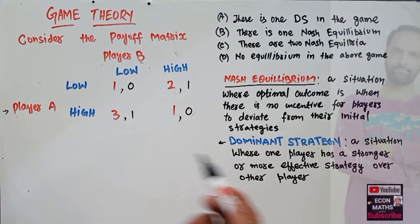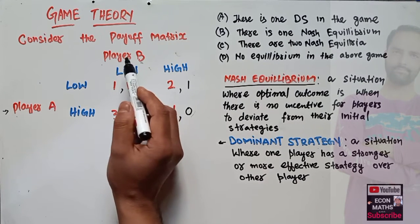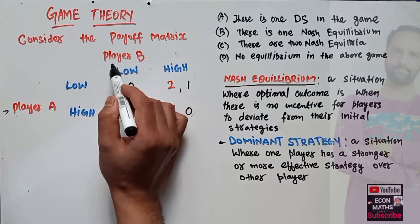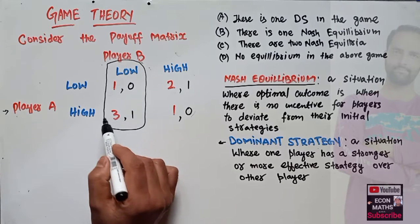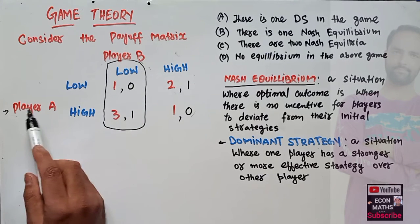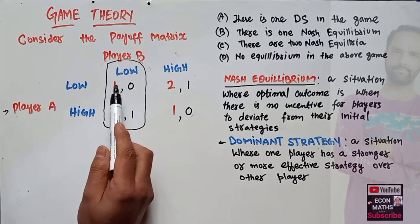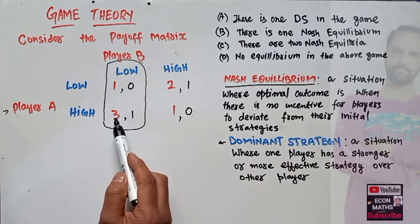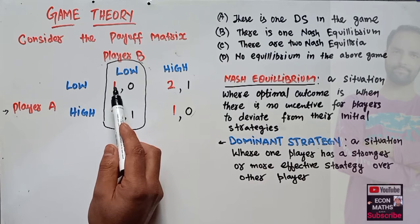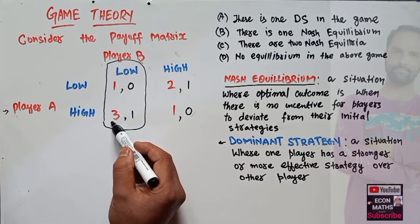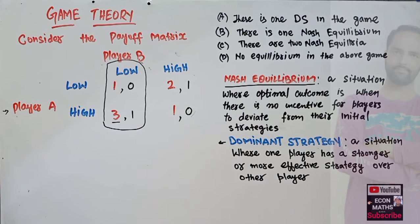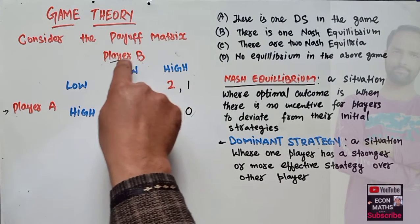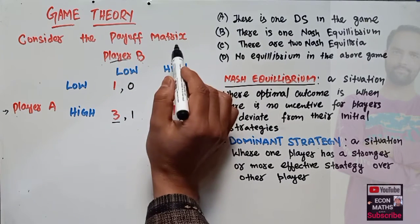To find Player A's dominant strategy, we see what happens when Player B chooses low. Player A has two options: to play low or high. High gives Player A a payoff of three, while low gives only one, so Player A will choose high. When Player B chooses low, Player A chooses high.